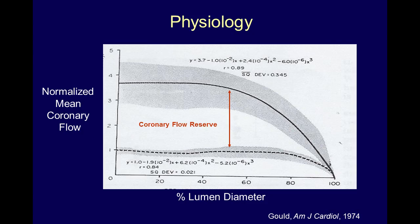This has to do with the kind of radiotracer that you inject and the camera that you image it on. Starting out with basics of coronary physiology — this is work done by a guy named Lance Gould in the 70s here at the Seattle VA. A lot of pretty large advances in cardiovascular imaging as well as the treatment of cardiovascular disease actually took place in Seattle, and this is one of them.